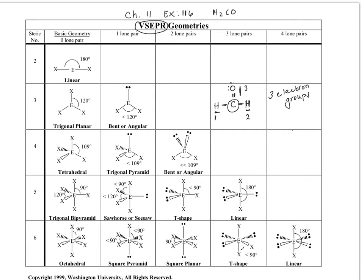We can now go to where in the chart we have three electron groups. If we look at linear, linear is when you have two electron groups. When you have three electron groups, you have two possible cases: three bonds, or two bonds and one lone pair. So which case do we have? We have this case, where we have three bonds. Therefore, the geometry of our H2CO molecule will be trigonal planar.